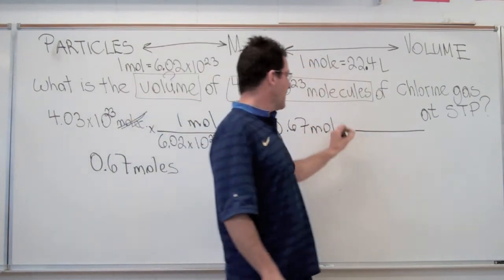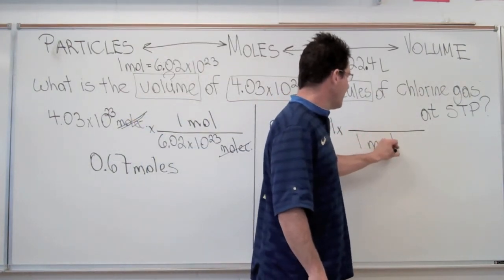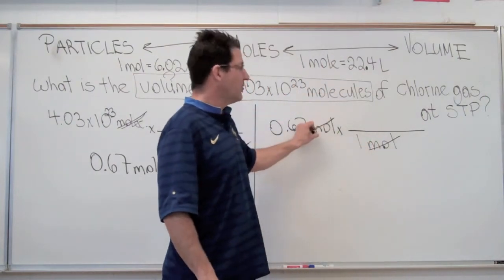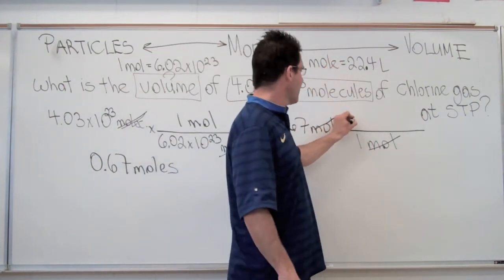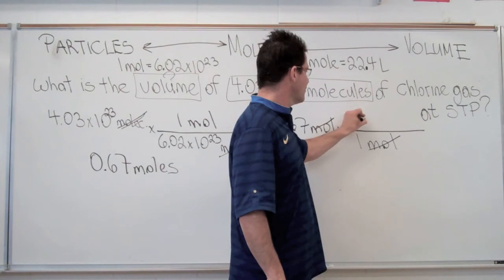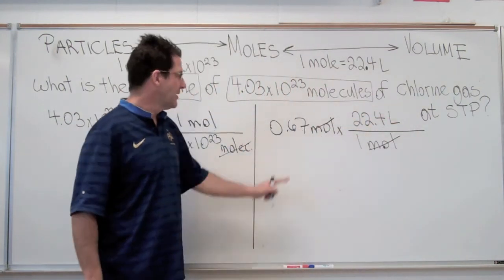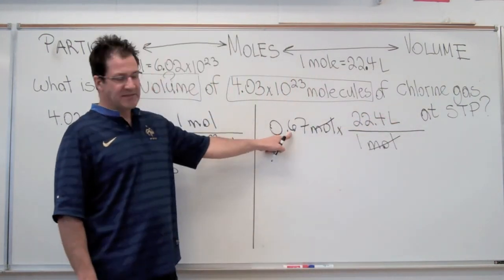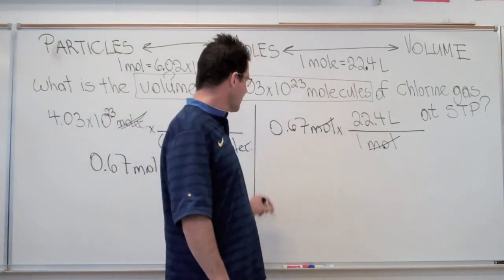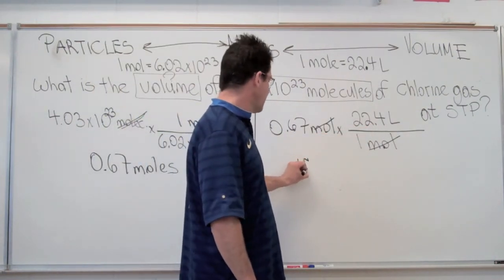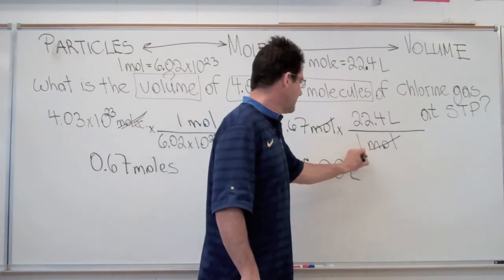I have moles here, I want to get rid of moles, so I'm going to put the mole in the bottom. Mole in the bottom, mole in the top — they cancel. The other part of my conversion factor, 22.4 liters, goes in the top. 0.67 times 22.4, and we end up with just about 15 liters.